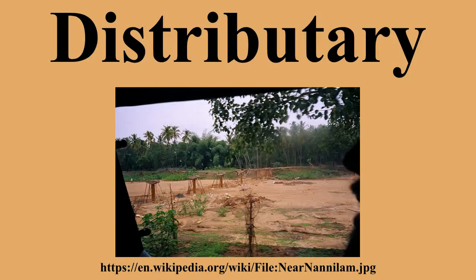The Okavango River ends in many distributories in a large inland delta called the Okavango Delta. It is an example of distributories that do not flow into any other body of water.